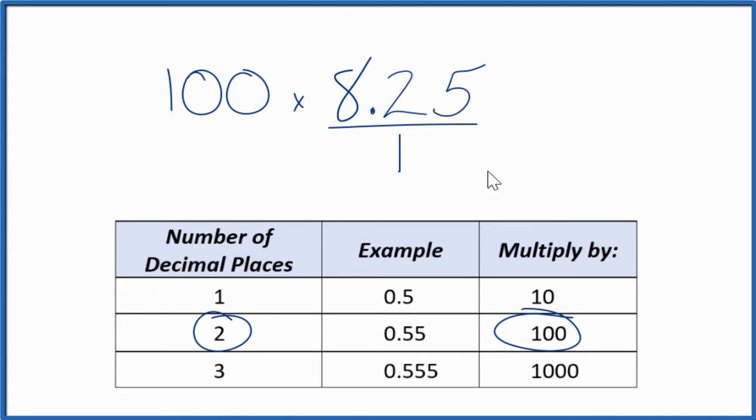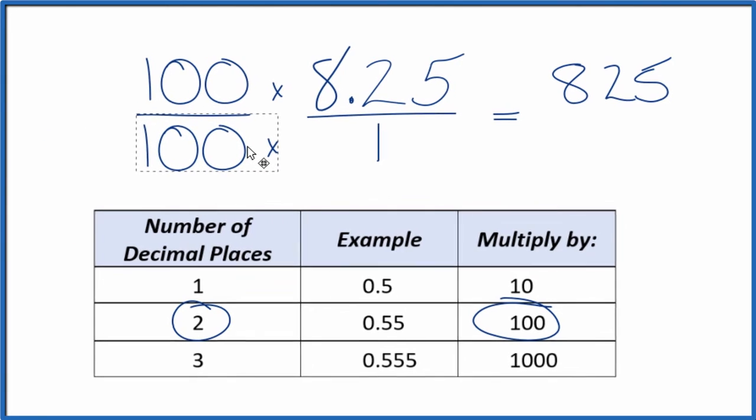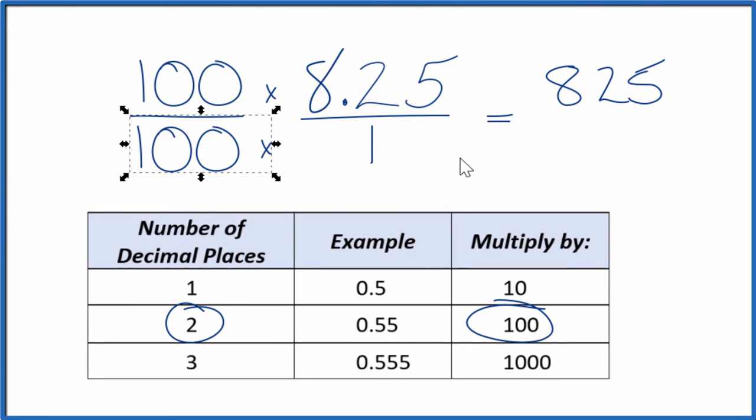100 times 8.25, that equals 825. We can't just multiply the numerator though. We also need to multiply the denominator by 100. That's because 100 over 100, that's just 1. So we're multiplying by 1. We don't change the value, just the way it's represented.